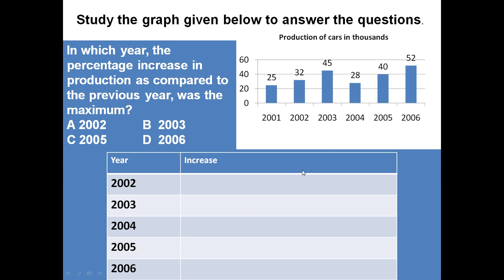Just to determine this, let us prepare a table: year and increase. Because 2001, before the 2001 data is not available so we have to start with 2002. In 2002 percentage increase was 32 minus 25 divided by 25 into 100, which is equal to 28 percent. If we see 2003, percentage increase was 45 minus 32 divided by 32 into 100, which is equal to 40.62 percent.